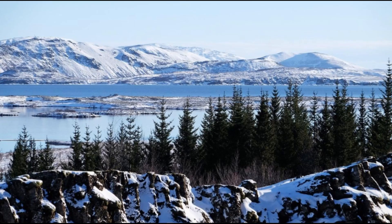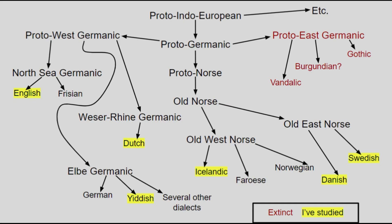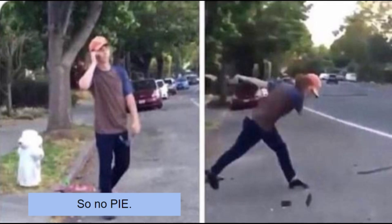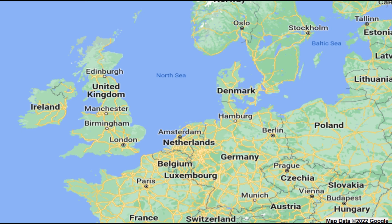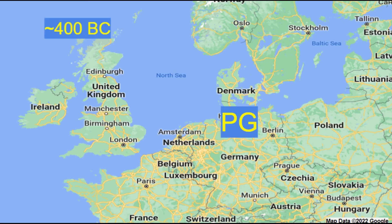First off, we've got to see the history of the family. The Germanic languages are a branch of the Indo-European language family. I'm not going to talk about Proto-Indo-European's evolution into Proto-Germanic today — that'll happen in a PIE-specific video. The generally given date for Proto-Germanic, i.e., the date of the words you'll see reconstructed, is about 400 BC in what's now northern Germany.